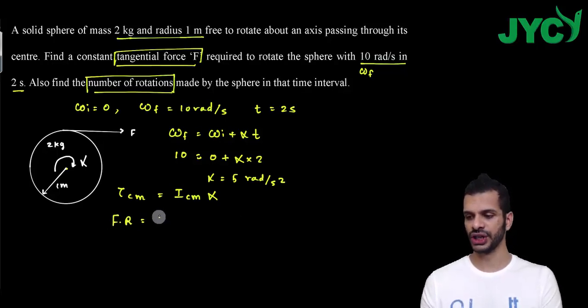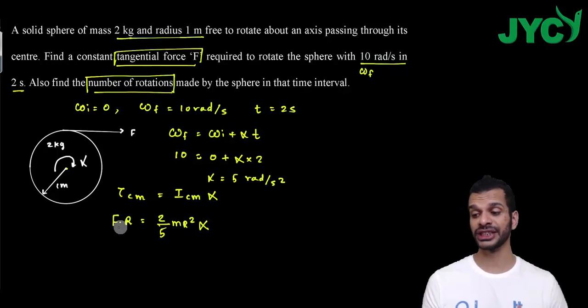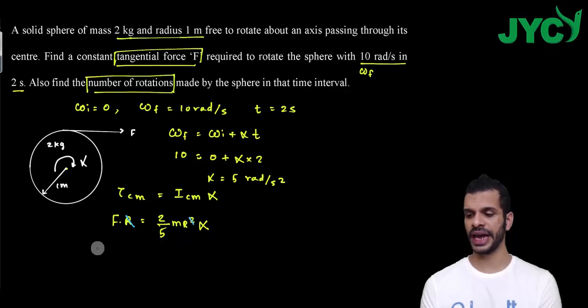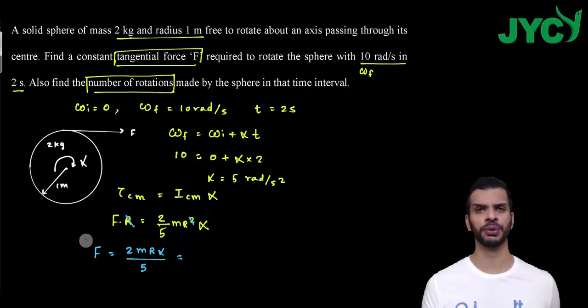Torque about center of mass due to this particular force is equal to F into perpendicular distance which is r. Moment of inertia is 2/5 m r square into alpha. Now what I need is force F. Here r and r cancel, then force f value is 2 m r alpha divided by 5. I know mass, radius, alpha values, put and answer will come.